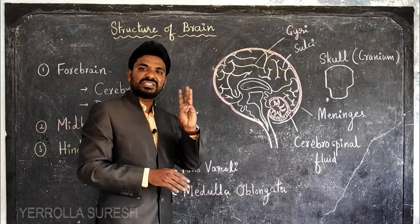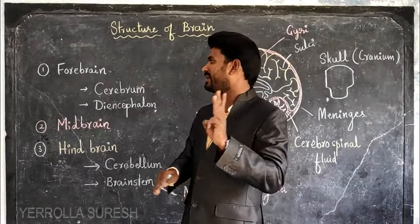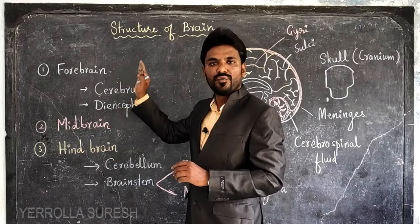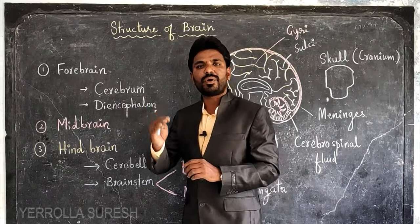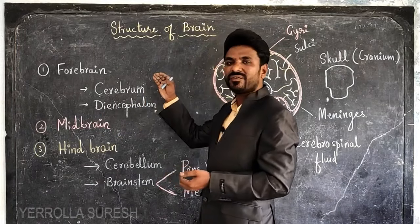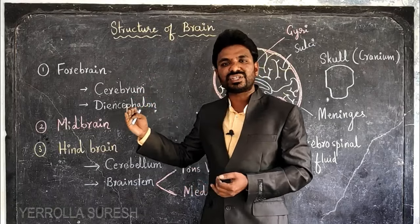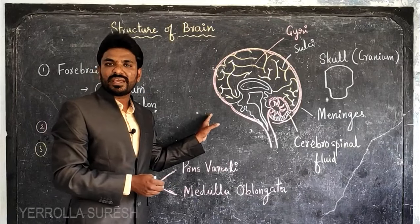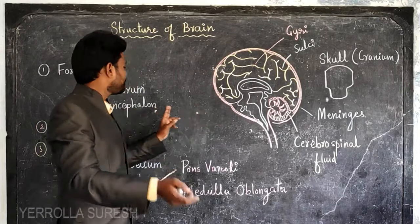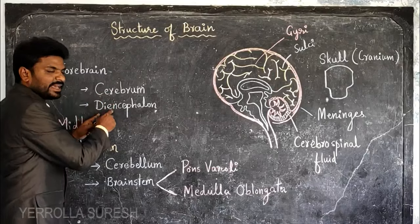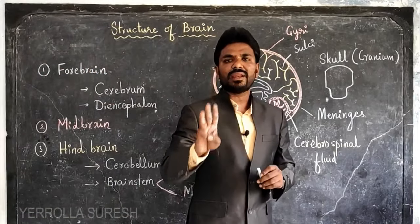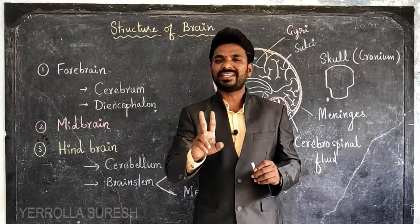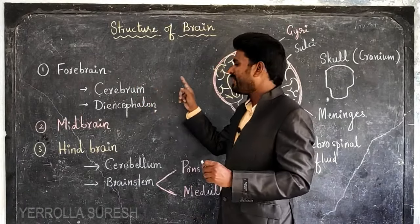The brain mainly has three parts: forebrain, midbrain, and hindbrain. The forebrain is the largest part of the brain. The forebrain has two parts: cerebrum and diencephalon. Cerebrum is the largest part when comparing to all other parts of the brain, and it is equally divided into two parts called cerebral hemispheres.